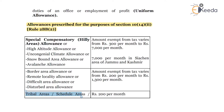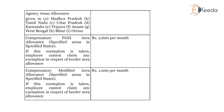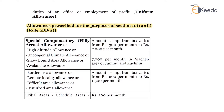For tribal areas or schedule areas, the exemption is 200 per month, which includes agency area allowance, and it is limited to specific states: Madhya Pradesh, Tamil Nadu, Uttar Pradesh, Karnataka, Tripura, Assam, West Bengal, Bihar, and Orissa. These are the states mentioned under rule 2BB wherein 200 per month will be the exempt allowance. Anything in excess — for example, 1,000 per month — means only 800 per month will be taxable.